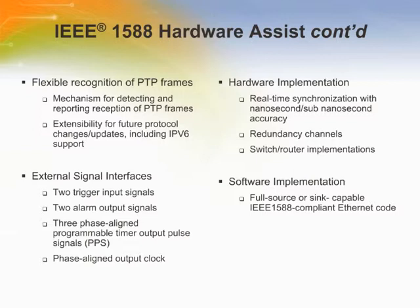These clocks are defined by a best master clock algorithm in which each clock in a distributed system identifies the most accurate clock and labels it master. All other slave clocks synchronize to this master using timestamps. Hardware implementation allows real-time synchronization with nanosecond or sub-nanosecond synchronization accuracy, allowing for redundant channels and switch router implementations.